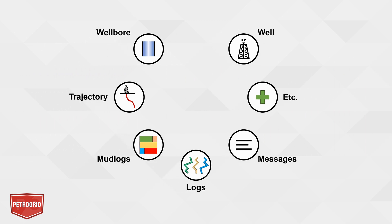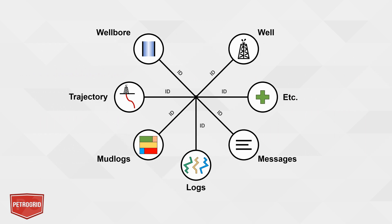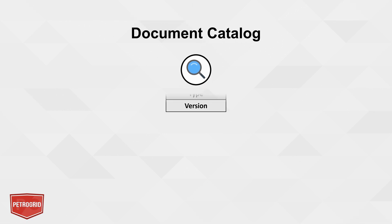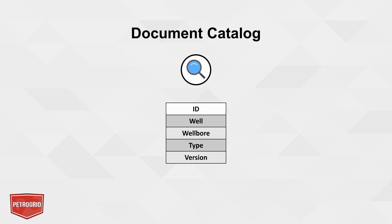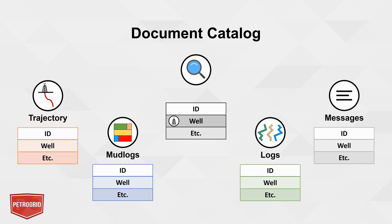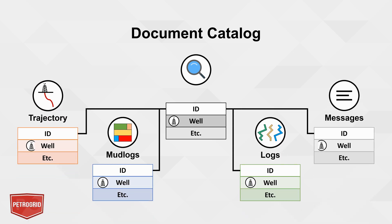To achieve this, all we have to do is simply connect by document ID the various WitsML object tables to the document catalog we generated in our first video. The document catalog contains a full list of all documents uploaded into the system, along with their corresponding well, wellbore, and WitsML object type. Therefore, as we filter the document catalog by well, only the documents containing the specified well or wells will be displayed, regardless of WitsML type.